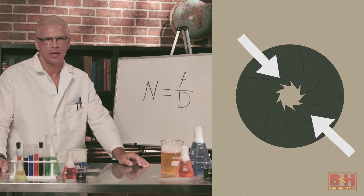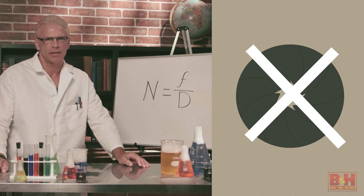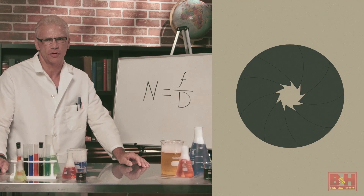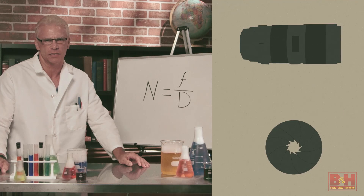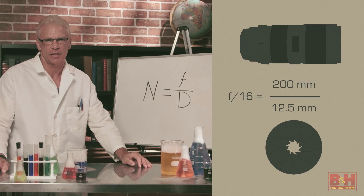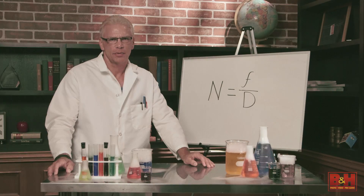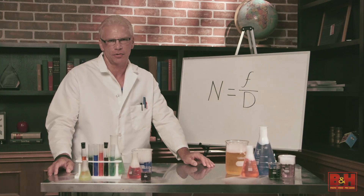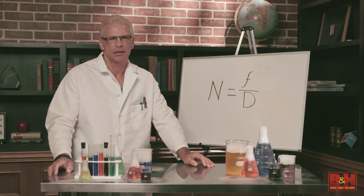The entrance pupil made of the diaphragm blades is not the aperture. What is commonly referred to as the aperture of any given lens is actually a ratio of the focal length of a lens to the diameter of the entrance pupil. And while diaphragm blades open to the proper diameter for a particular aperture setting to allow light to come through, this round opening is not the shutter.